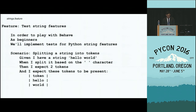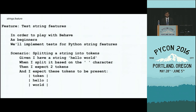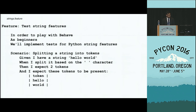What I've done here is taken my string-splitting code and turned it into a file called strings.feature. The .feature file extension is recognized by GitHub for syntax highlighting and the VI text editor. All of this stuff at the beginning — in order to play with Behave as beginners — is not stuff that is actually executed, but it helps describe the context and what the test is supposed to do.